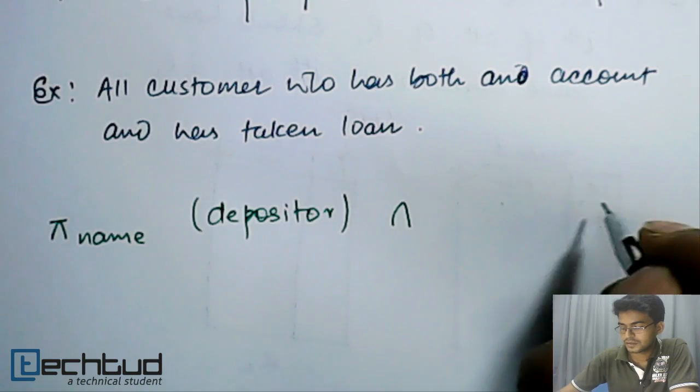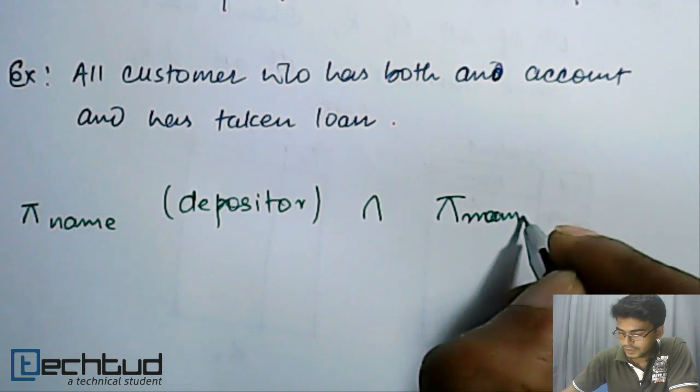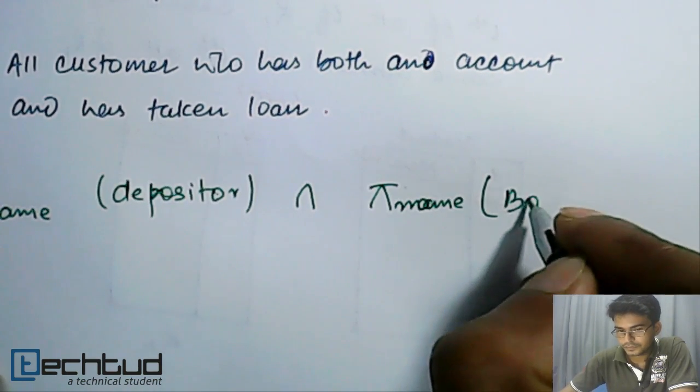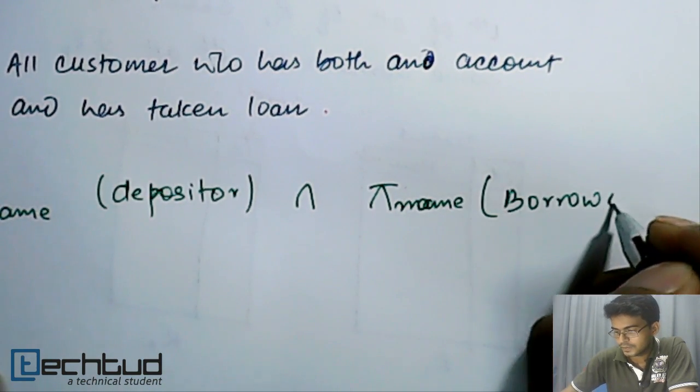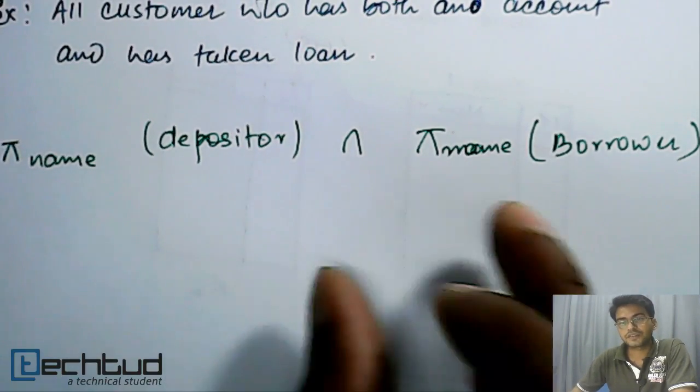...with the name, name from borrower. That's how we can proceed, like the name from depositor and intersection with name from borrower.